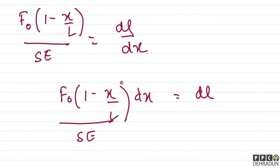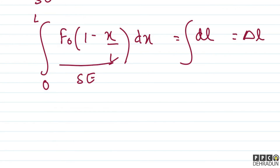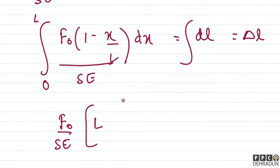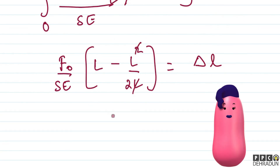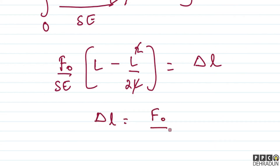Now we need to integrate. We vary x from 0 to L so that all elements are covered. The summation of dL gives total elongation delta L. Integrating: F0 upon SE is constant and comes out. The integral of 1·dx gives L, minus the integral of x/L dx gives x²/2L evaluated at L, which gives L/2. So delta L equals F0·L upon 2SE.